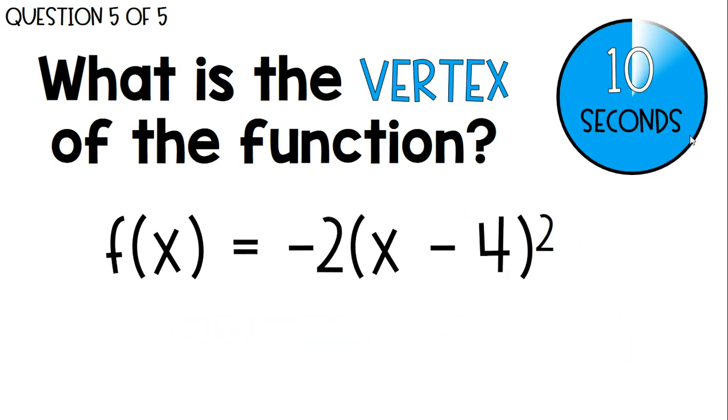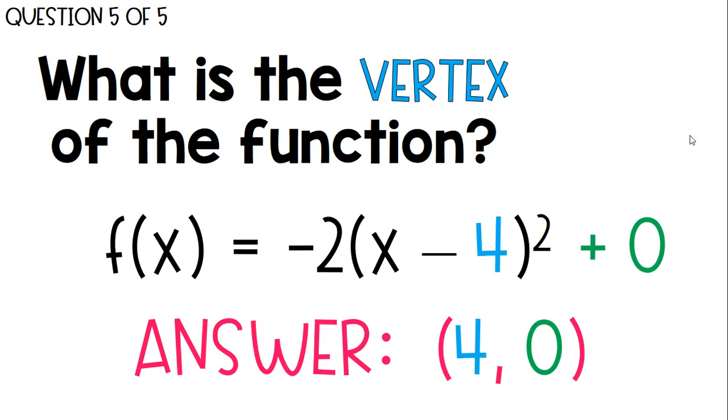Next, and last one. What's the vertex of this function? 4, 0. When you don't see any k value at the end, it means it's just 0.